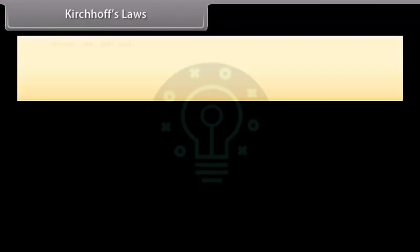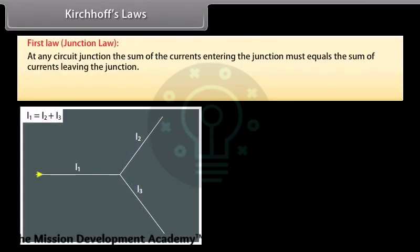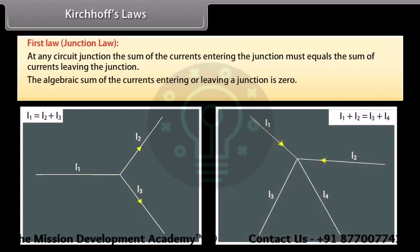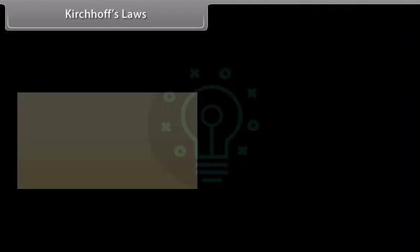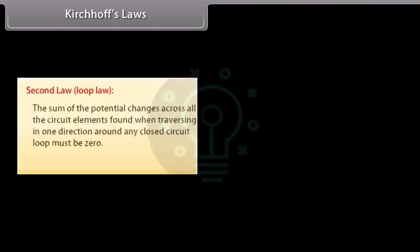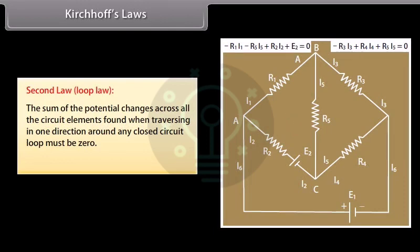Kirchhoff's first law states that at any circuit junction, the sum of the currents entering the junction must equal the sum of currents leaving the junction — the algebraic sum of currents entering or leaving a junction is zero: ΣI = 0. Kirchhoff's second law states that the sum of the potential changes across all circuit elements found when traversing one direction around any closed circuit loop must be zero: ΣΔV = 0.